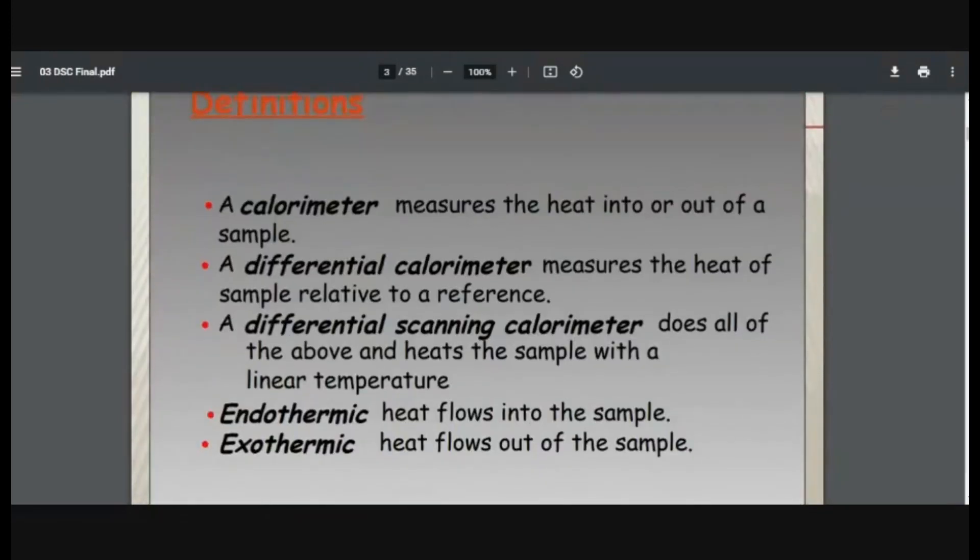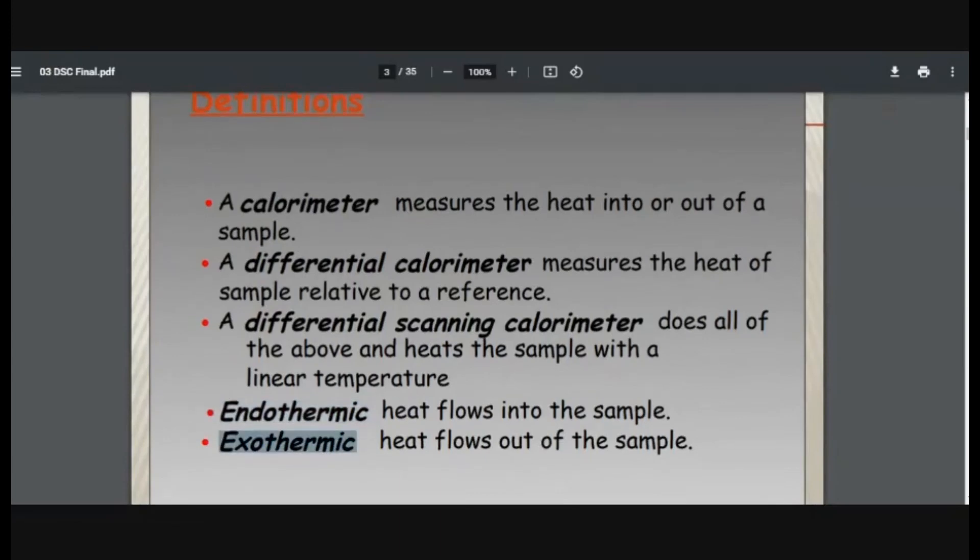So we will require a calorimeter. A calorimeter measures the heat into or out of a sample. A differential calorimeter measures the heat of sample relative to reference. Very simple. A differential scanning calorimeter does all of the above - that is, it is doing calorimeter work also and differential calorimeter work also. All of the above and heats the sample with linear temperature. It also measures calories and simultaneously measures the difference in calories between sample and reference. Now you know what is exothermic and endothermic, so we will not see that.